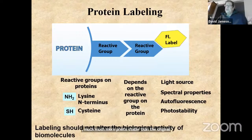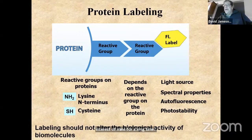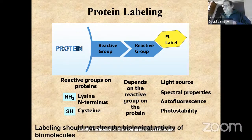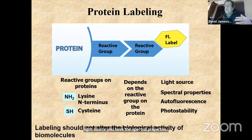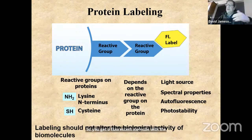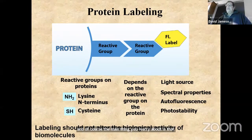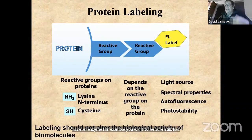What about labeling proteins? The protein has reactive groups — usually lysines, the N-terminus, or cysteines. The fluorescent probe is chosen depending on the light source, desired spectral properties, autofluorescence concerns, or photostability requirements. You get a fluorescent molecule with a reactive group that will react with the protein's reactive group. The main concern is that labeling does not alter the biological activity — if you have an enzyme, you want to be sure it still has all its properties after labeling.